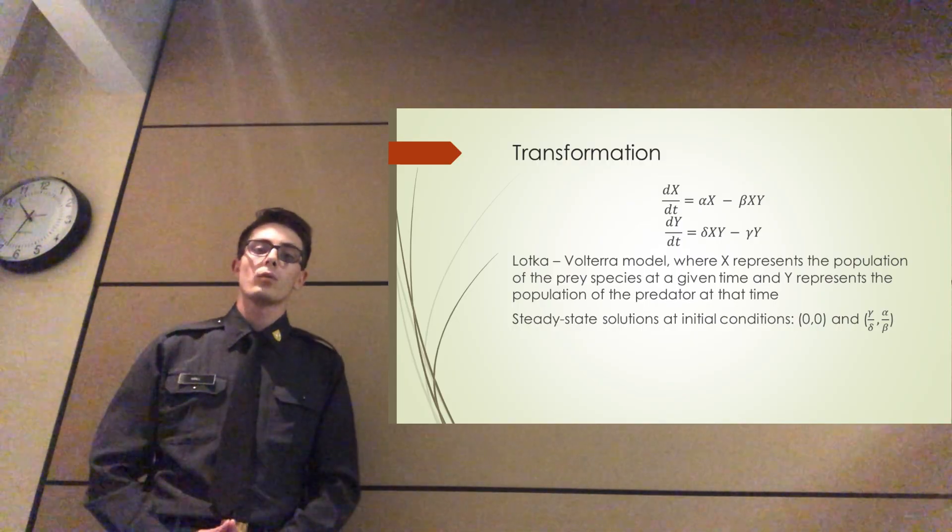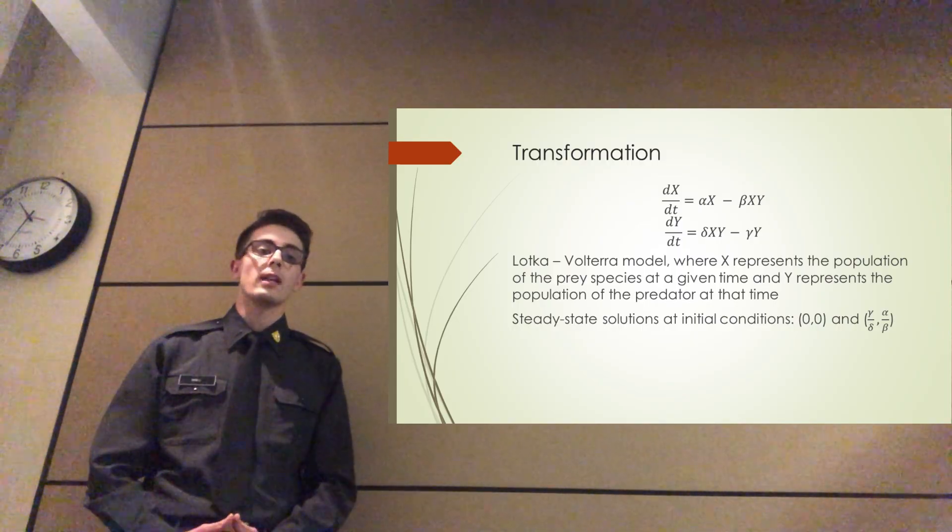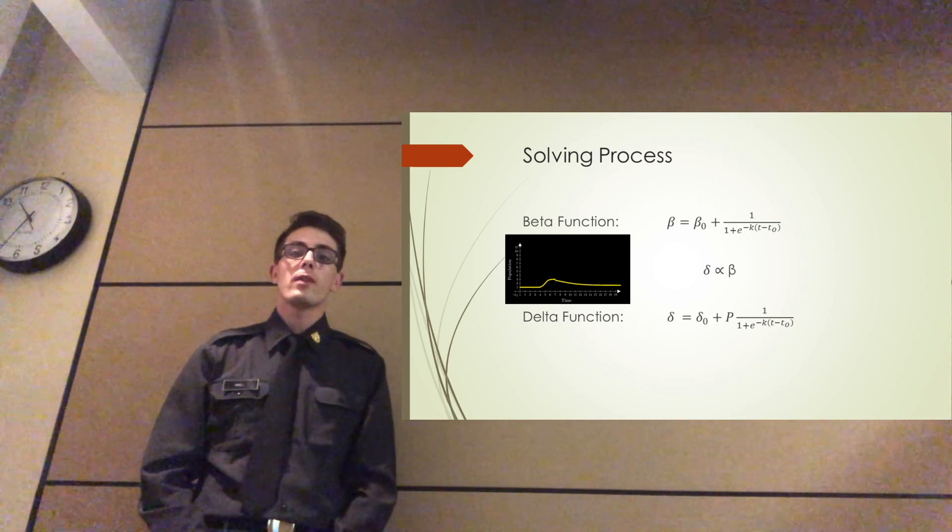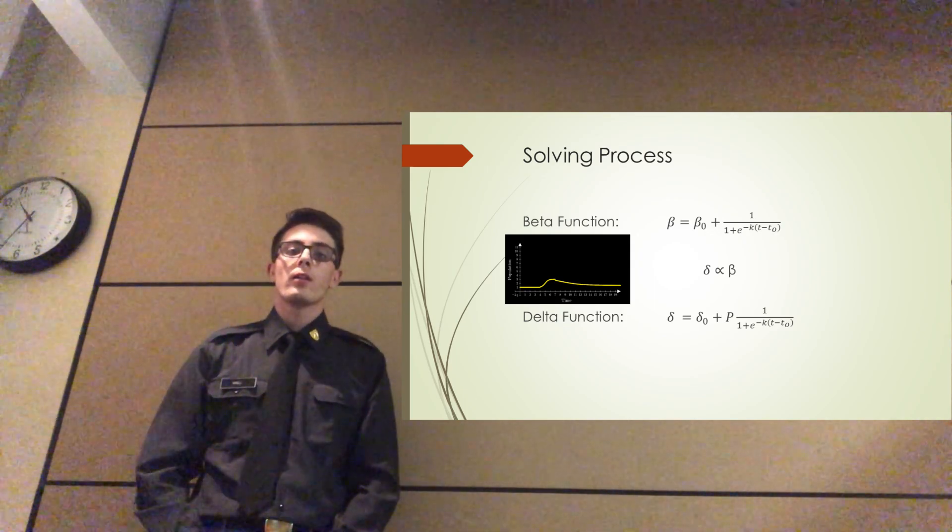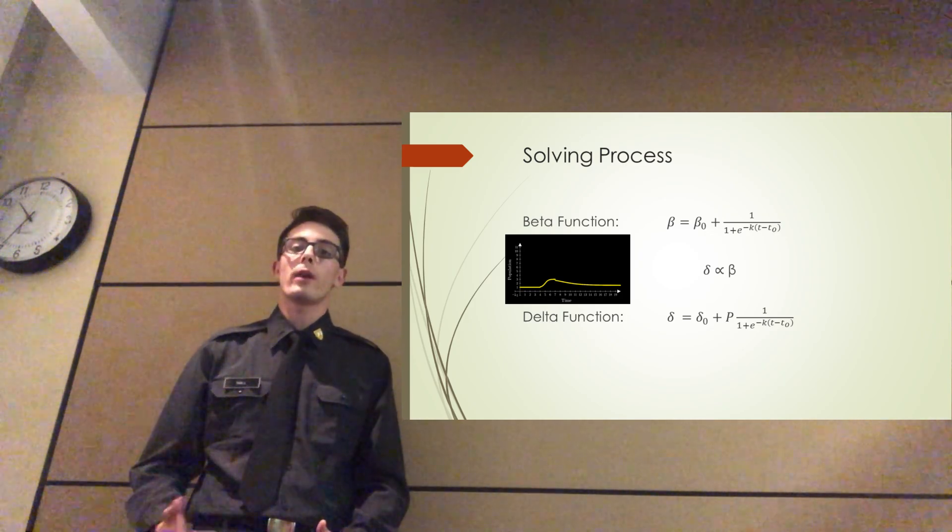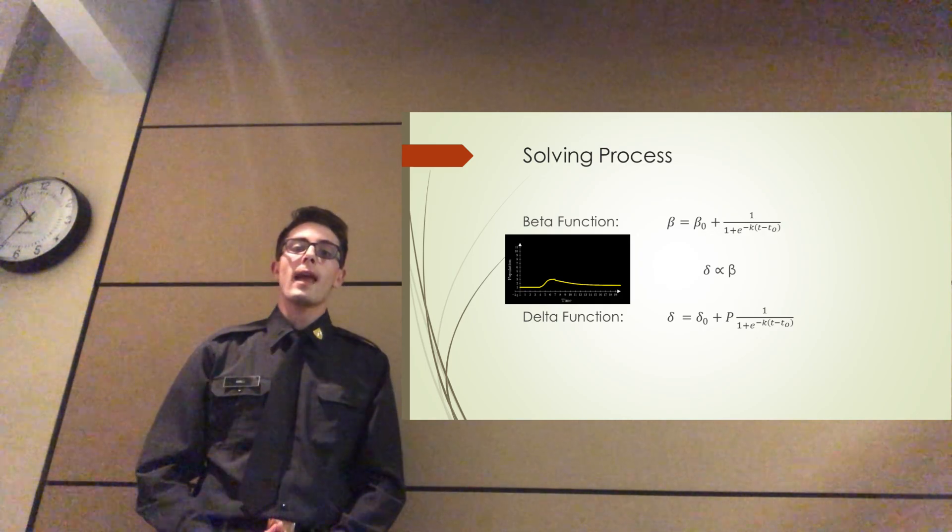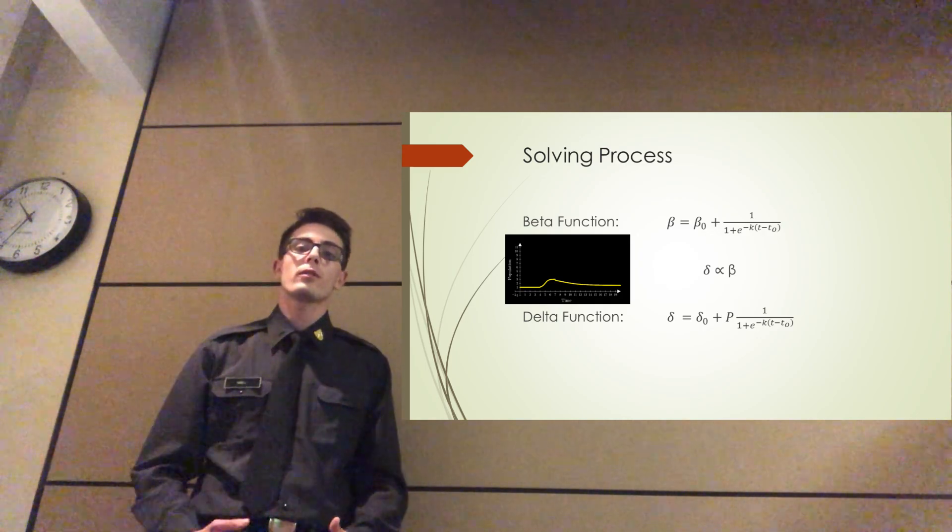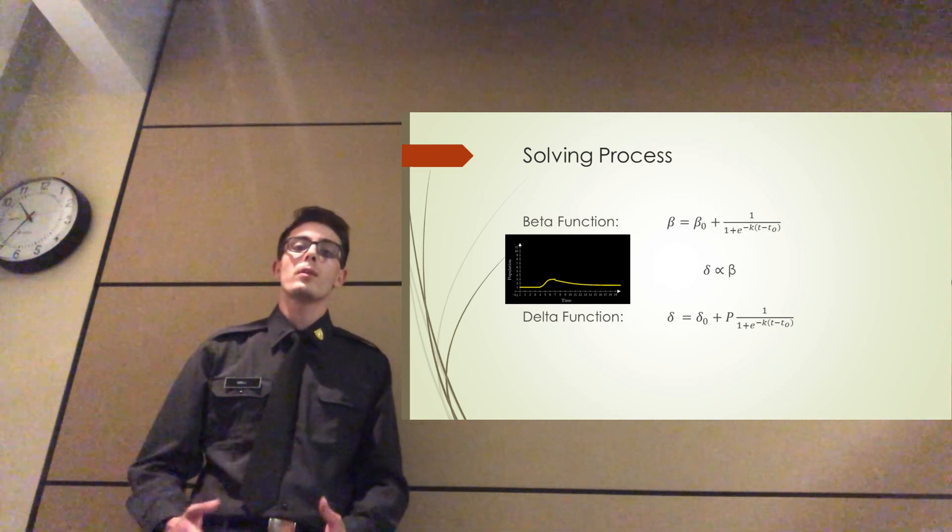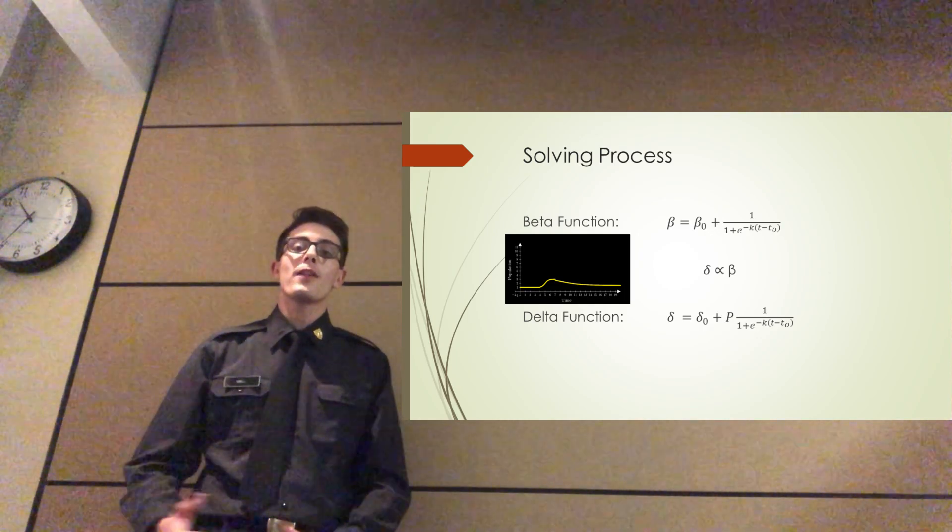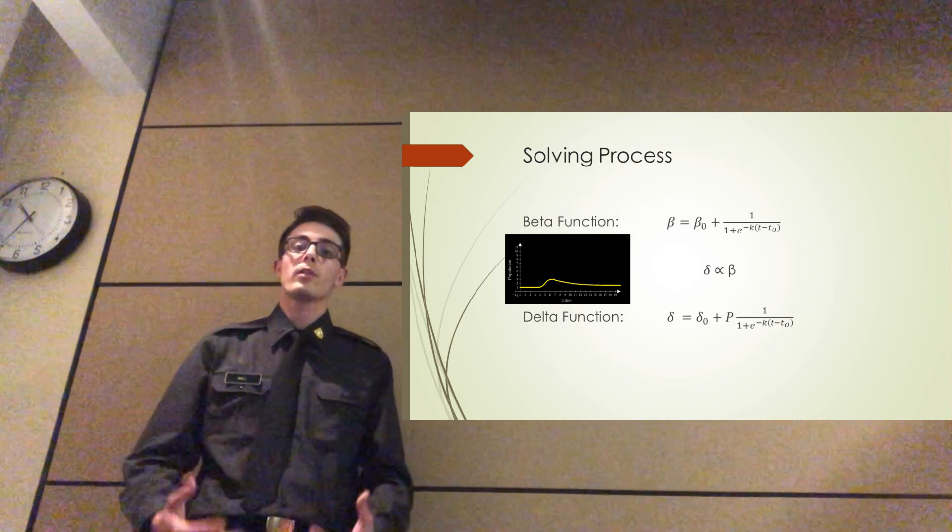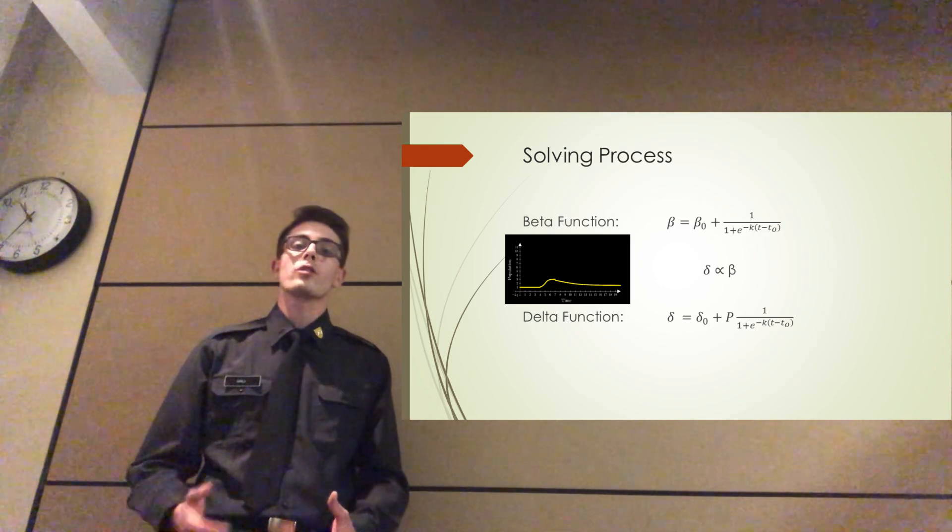In order to model the effect of humans on the animal populations, we chose to vary the parameters beta and delta over time. The parameter beta represents how much loss the prey population feels per interaction between predator and prey. So as anti-predator behaviors are reduced after the arrival of humans, we're going to see this value increase. As per each interaction, the predator is going to be more likely to get that kill. And then the delta parameter, which represents how much the predator population is helped by an interaction with prey, is going to increase proportionally to that.